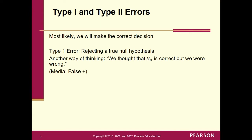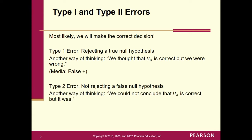A Type 2 error is not rejecting a false null. We decided not to reject the null — we have inconclusive evidence. Another way of thinking about it: we could not conclude the alternative is correct, but it was. The media calls this a false negative. So I would memorize the formal definition, but that alternative framing may be easier to think about.